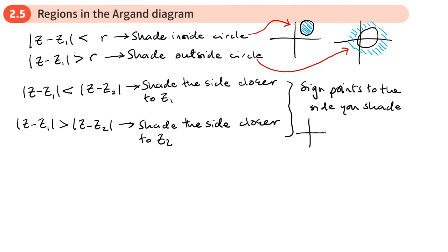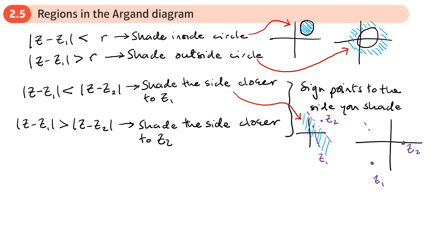For the perpendicular bisector examples: we've got two points z₁ and z₂ with the perpendicular bisector between them. If we shade this side — the side closer to z₁ — that's the first type. And if we shade the other side, closer to z₂, that's the second type. It's pointing to the side which you shade — either one side of the perpendicular bisector or the other.